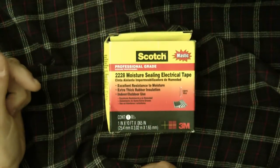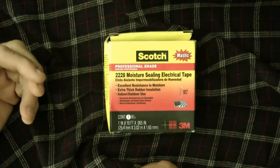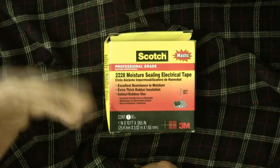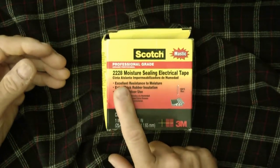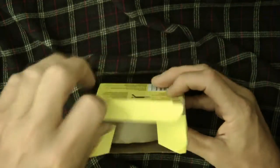Hey guys, I want to show you a product that I use a lot when I'm weatherproofing, like coaxial connections outside. This is Scotch 2228 moisture sealing electrical tape, and I'll just show you.